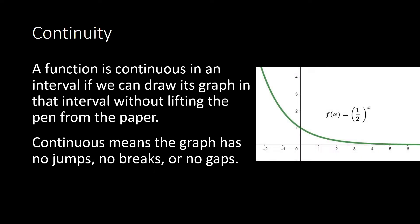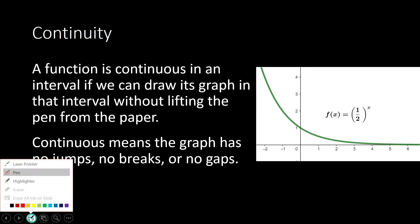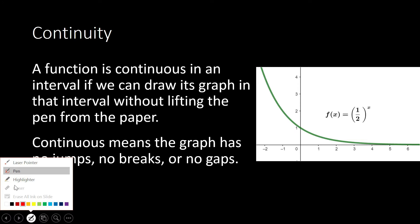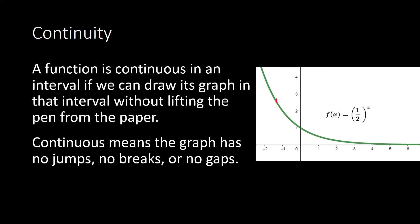So this one, for example, is the graph of the function f(x) = (1/2)^x. In the interval zero to infinity, or even in the entire real number line, this function is continuous because we can trace its graph without ever lifting our pen from the paper — except of course for the arrow part, which is not part of the graph.